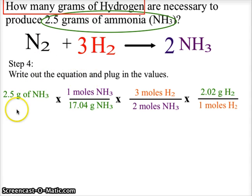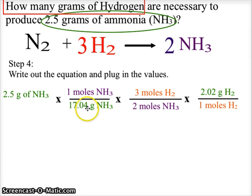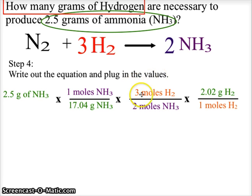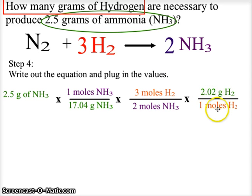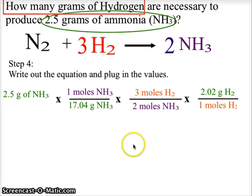Our setup is: 2.5 grams of ammonia, times one mole of ammonia over 17.04 grams of ammonia — which is the molar mass of NH₃. The middle ratio is the mole ratio from the balanced chemical equation: 3 moles of hydrogen over 2 moles of ammonia, where 3 is the coefficient in front of hydrogen and 2 is the coefficient in front of ammonia. Then we multiply by 2.02 grams of hydrogen over one mole of hydrogen. The 2.02 is the molar mass of hydrogen — we're reminded that hydrogen is diatomic, H₂, which gives us the 2.02.